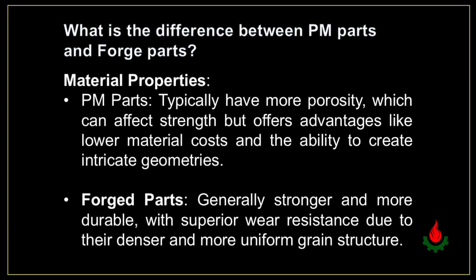In terms of material properties, PM parts typically have more porosity, which can affect strength but offers advantages like lower material costs and the ability to create intricate geometries. Forged parts are generally stronger and more durable, with superior wear resistance due to their denser and more uniform grain structure.